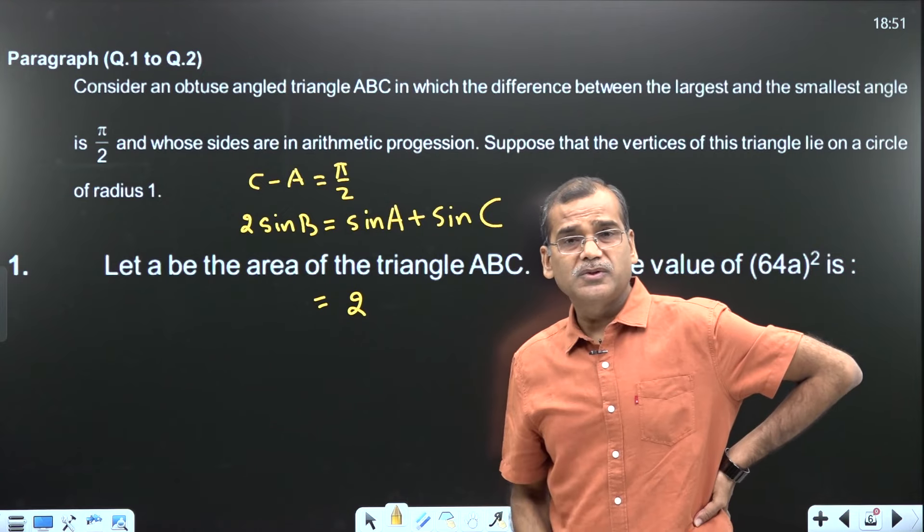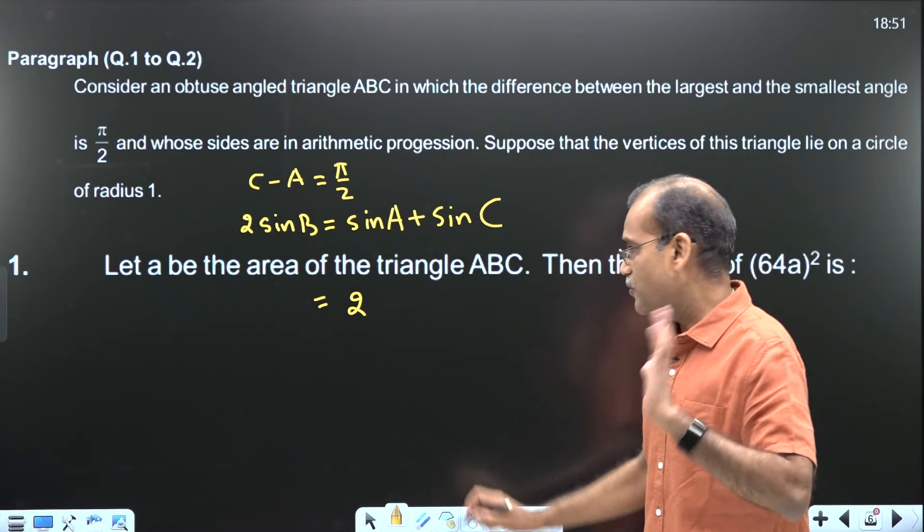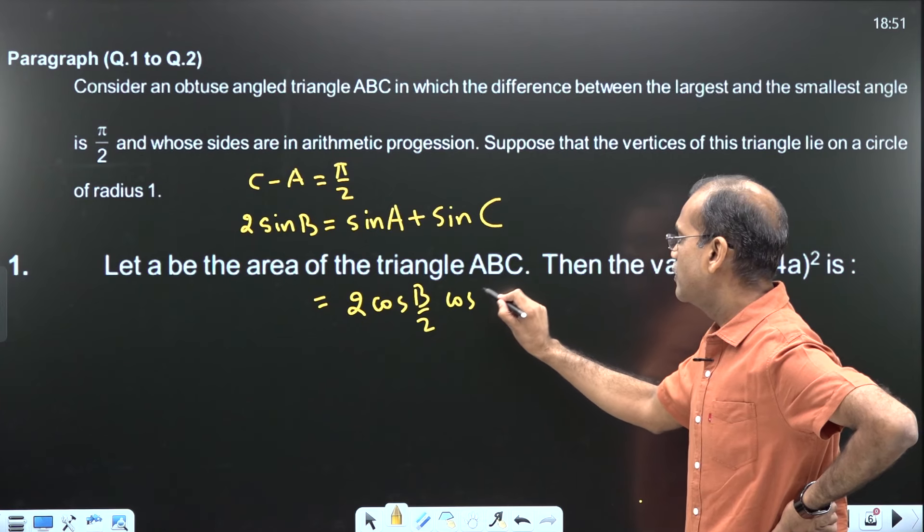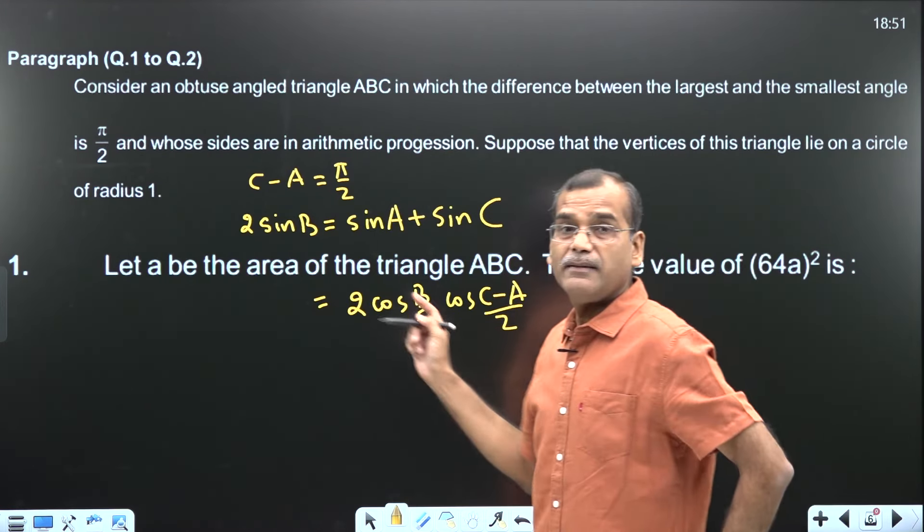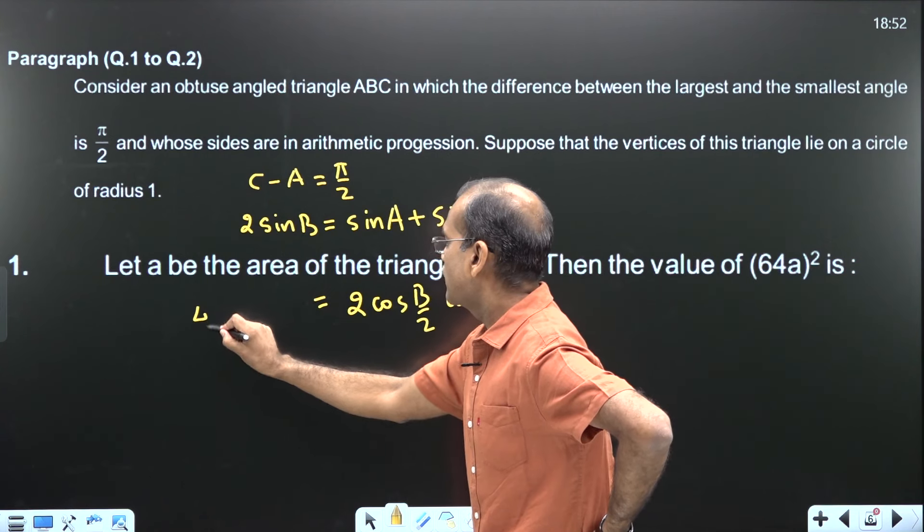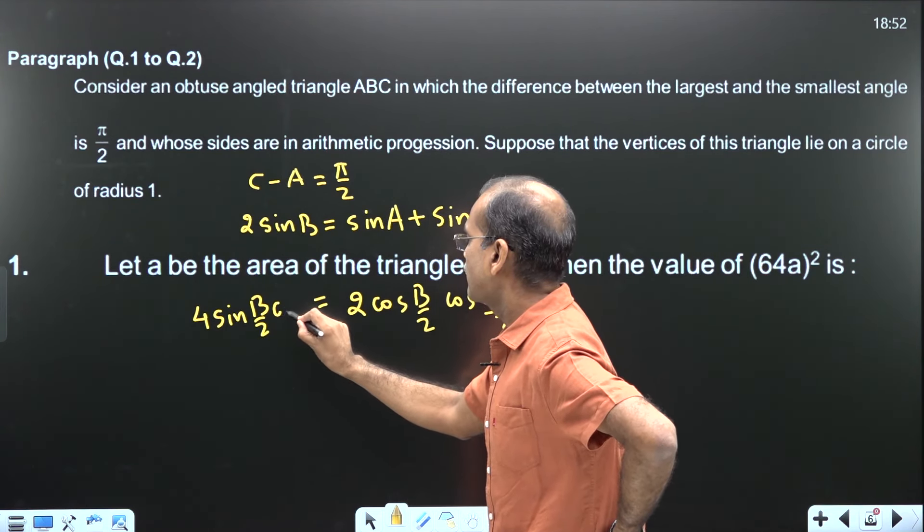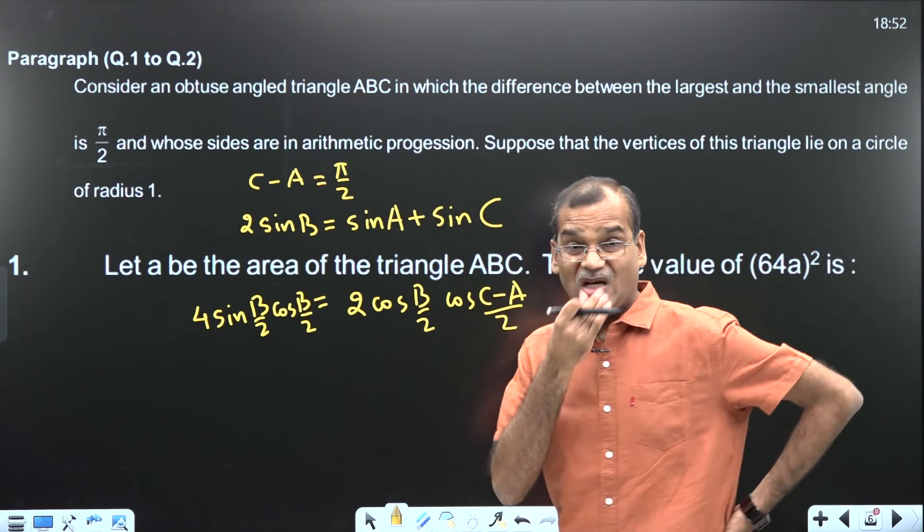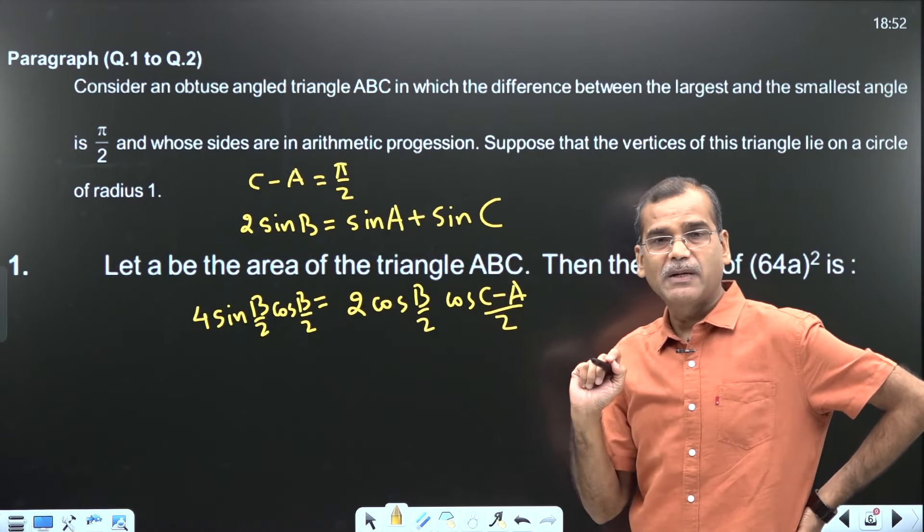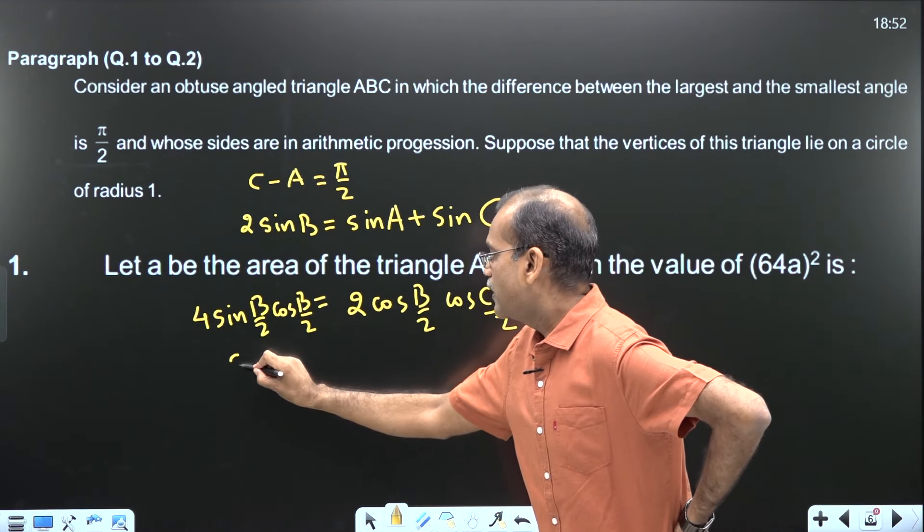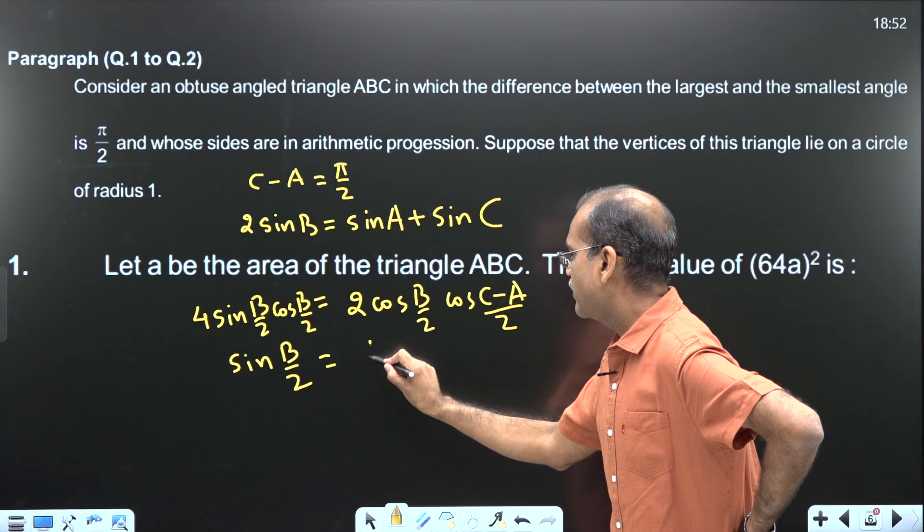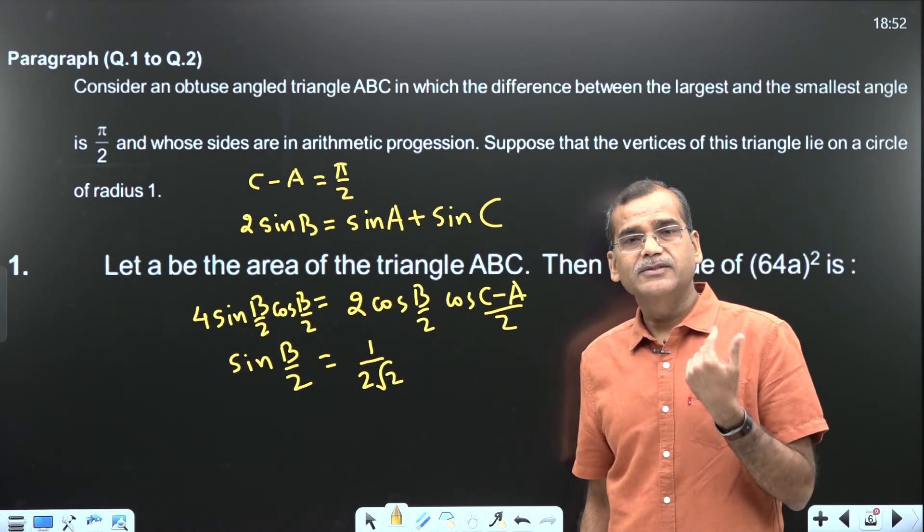So I get 2 sin of A plus C by 2 cos B by 2 cos of C minus A by 2. And by symmetry, let's write this also into half angle: 2 sin B by 2 cos B by 2. I think cos B by 2 cannot be 0. And you make use of the fact that C minus A is pi by 2, so this becomes pi by 4. Therefore I get sin B by 2 equals 1 by root 2, which is 1 by 2 root 2. Calculation is your part.